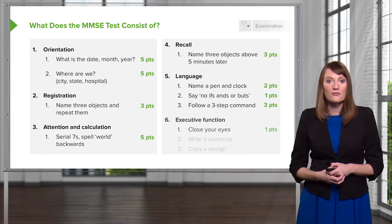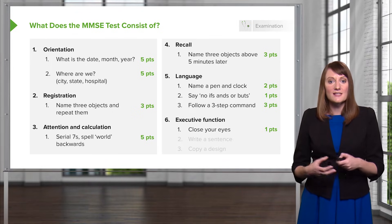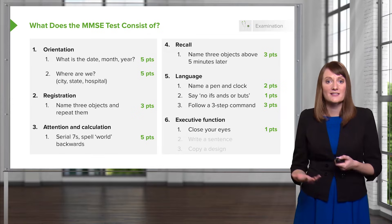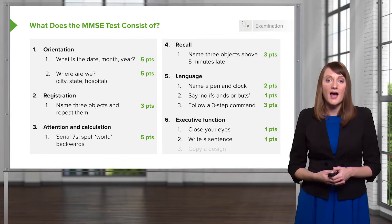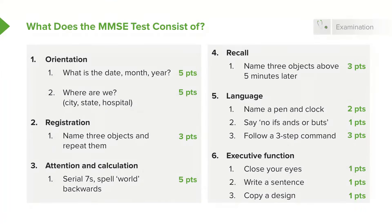Other things that you're going to do is see how well they can complete tasks. Tell them to close their eyes, have them write a sentence, and have them copy a design which should be three-dimensional and something that they're able to construct without problem. You'll score all of this.